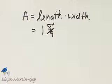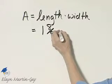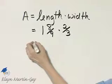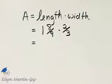And then what is the width of this rectangle? The width is given to be 2 thirds of a mile. Let's then multiply this fraction with this mixed number.